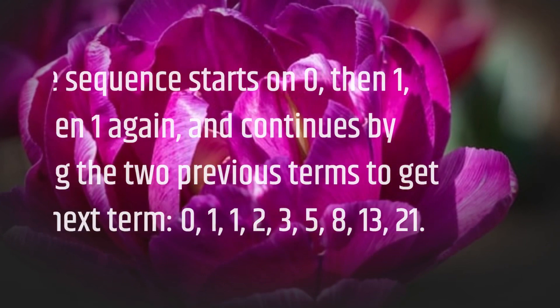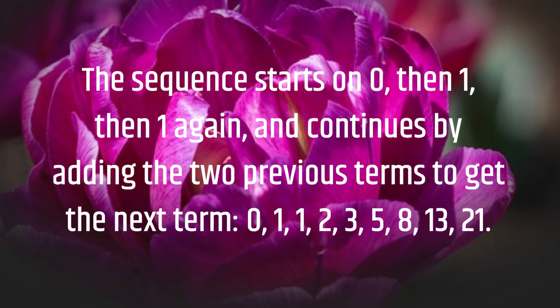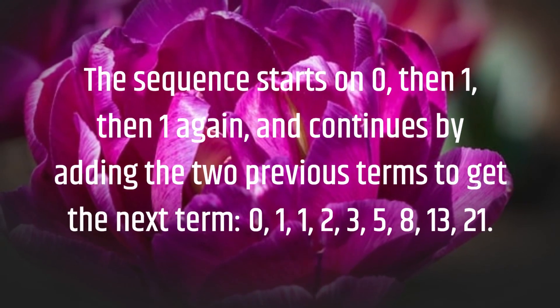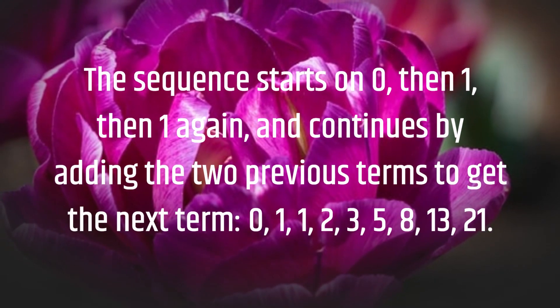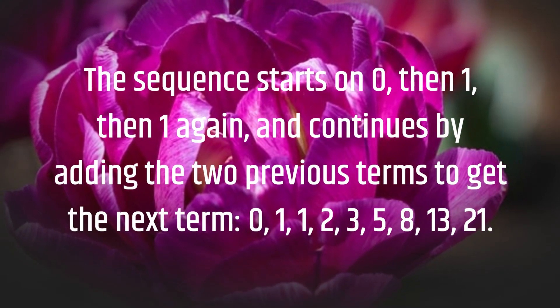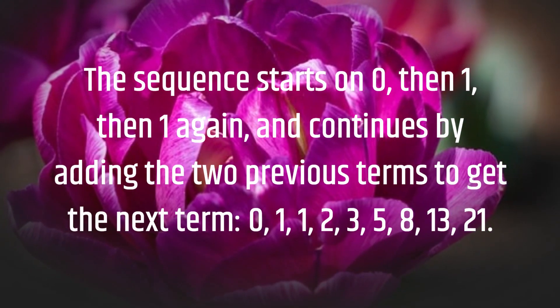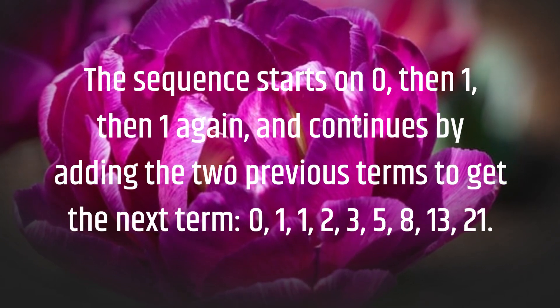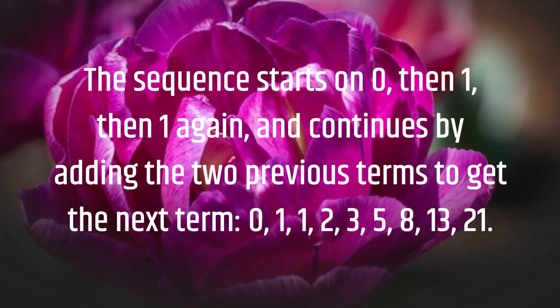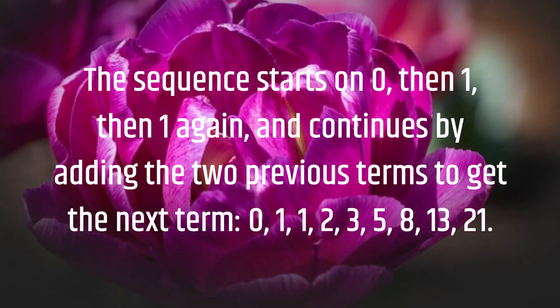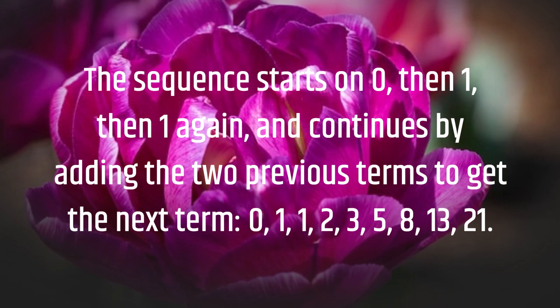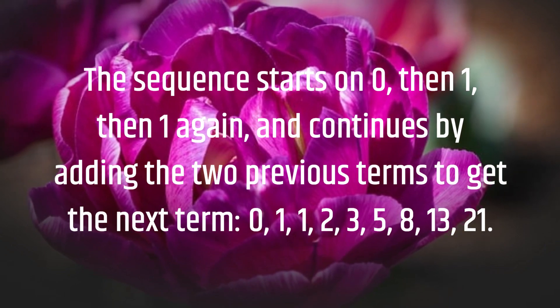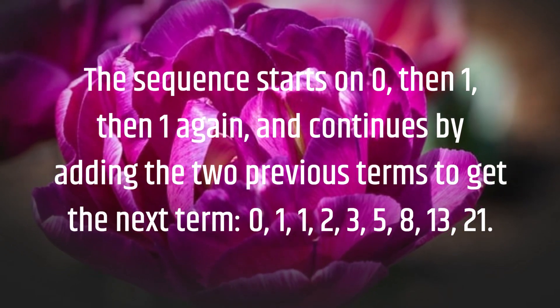The sequence starts on 0, then 1, then 1 again, and continues by adding the two previous terms to get the next term: 0, 1, 1, 2, 3, 5, 8, 13, 21.